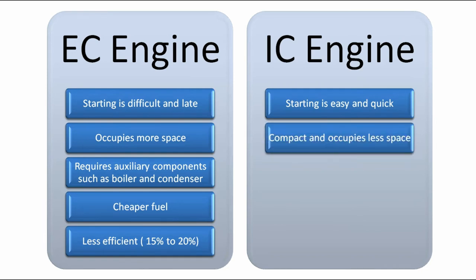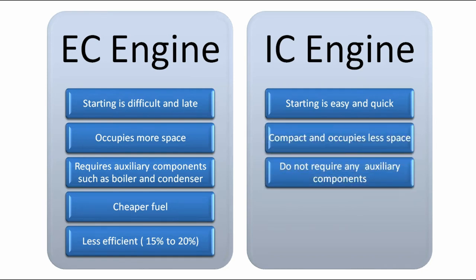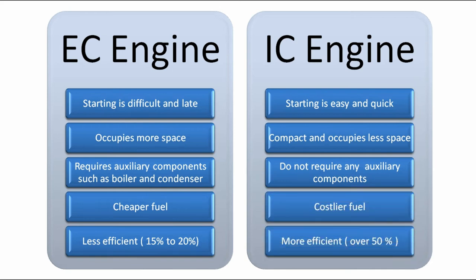Whereas in an IC engine, starting is easy and quick, it is compact and occupies less space, does not require any auxiliary components, uses costlier fuel, but is more efficient — around 35%. All these advantages clearly depict that the IC engine dominates the external combustion engine.